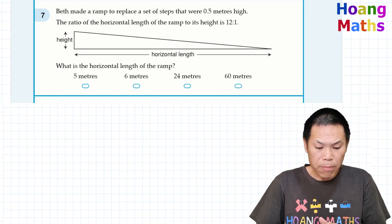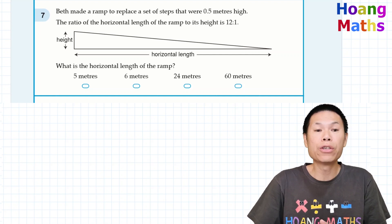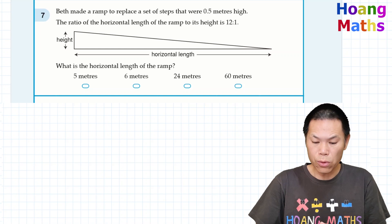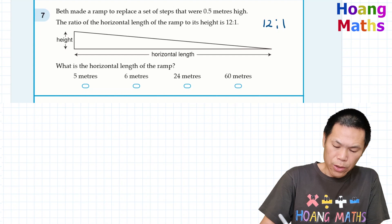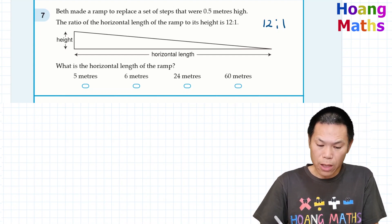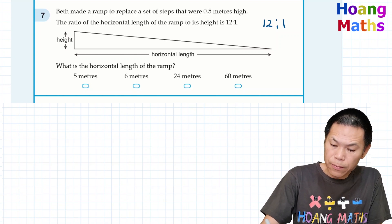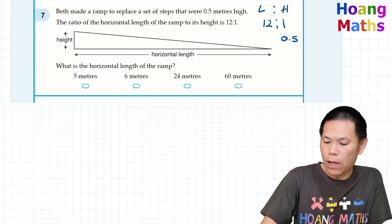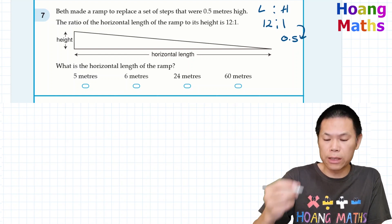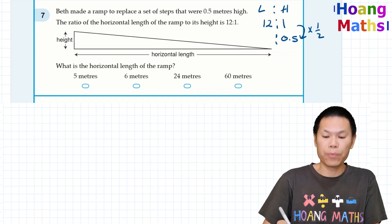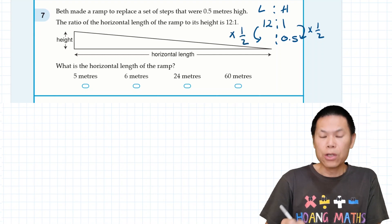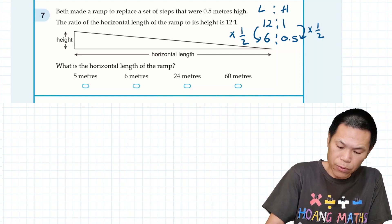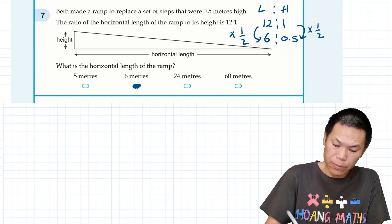Question seven: Beth made a ramp to replace steps that were 0.5 meters high. The ratio of the horizontal length of the ramp to its height is 12 to 1. What is the horizontal length? The height is 0.5, and from the ratio, the length is 12. From 1 to 0.5, we multiply by a half. So we also multiply 12 by a half: half of 12 is 6. The horizontal length of the ramp is 6 meters.